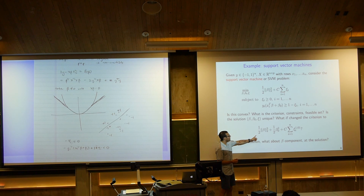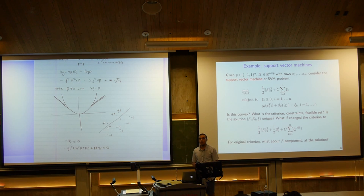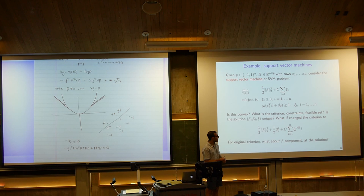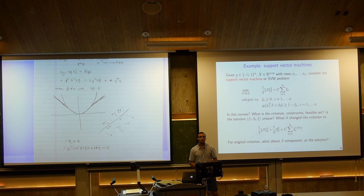An interesting question: what if we only want uniqueness of β — the part determining the hyperplane, not the slack variables? Think about this: if I fix all other variables, the criterion is actually strictly convex in β. Think about whether that implies uniqueness of just the β component of the SVM solution.